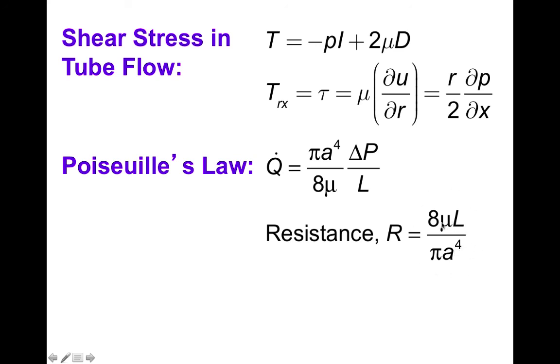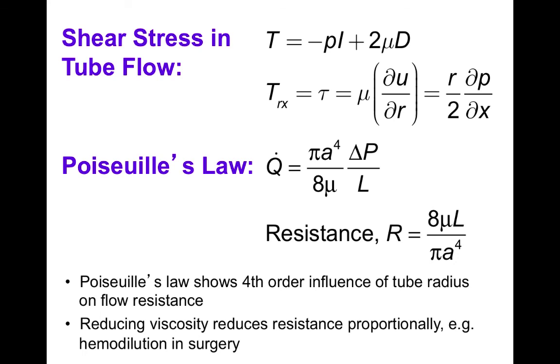Again, the resistance increases proportionately to the length of the tube and the viscosity of the fluid and in inverse proportion to the diameter. So as the diameter gets smaller, resistance increases dramatically to the fourth power of the diameter. You can also see that reducing viscosity would also reduce resistance proportionately. An example of this is what occurs in surgery when blood gets replaced with some fluid, so we get a hemodilution, and this actually can be beneficial to maintain blood flow.